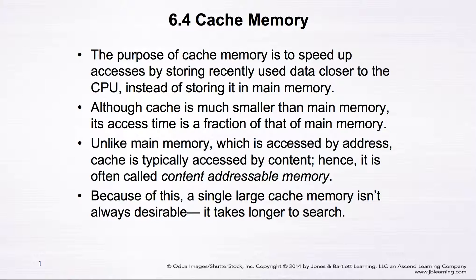The benefit is significant in terms of access time, because the access time for cache memory is just a fraction of the time required to access the same information if it's stored in the main memory. Unlike main memory, which is accessed by address, cache is typically accessed by content, so it's often called content-addressable memory. A single large cache memory isn't always desirable because it takes longer to search the whole cache to identify the content we want to retrieve. Basically, cache memory has a very small size.